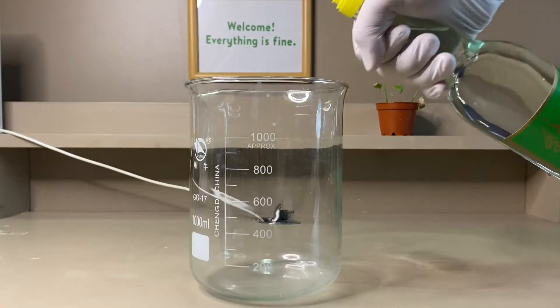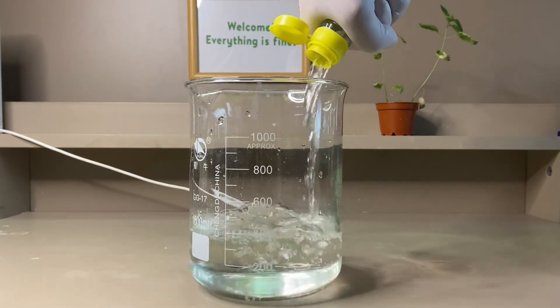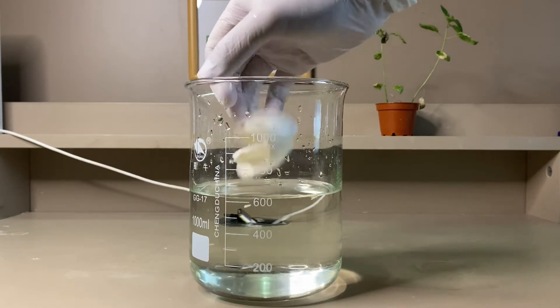Today we're going to turn eggshells and vinegar into acetone thinner. First, we added our vinegar into a large beaker, followed by an egg.